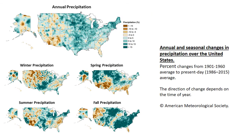Looking at changes in precipitation already seen in the United States, just as with temperature, changes in annual precipitation will not be uniform across all seasons. For Arkansas, summer has tended to get drier over time — those brown and tan colors represent a reduction in summer precipitation when comparing the early 20th century to more recent levels. However, looking at the map for fall, fall has actually gotten a lot wetter in more recent years.